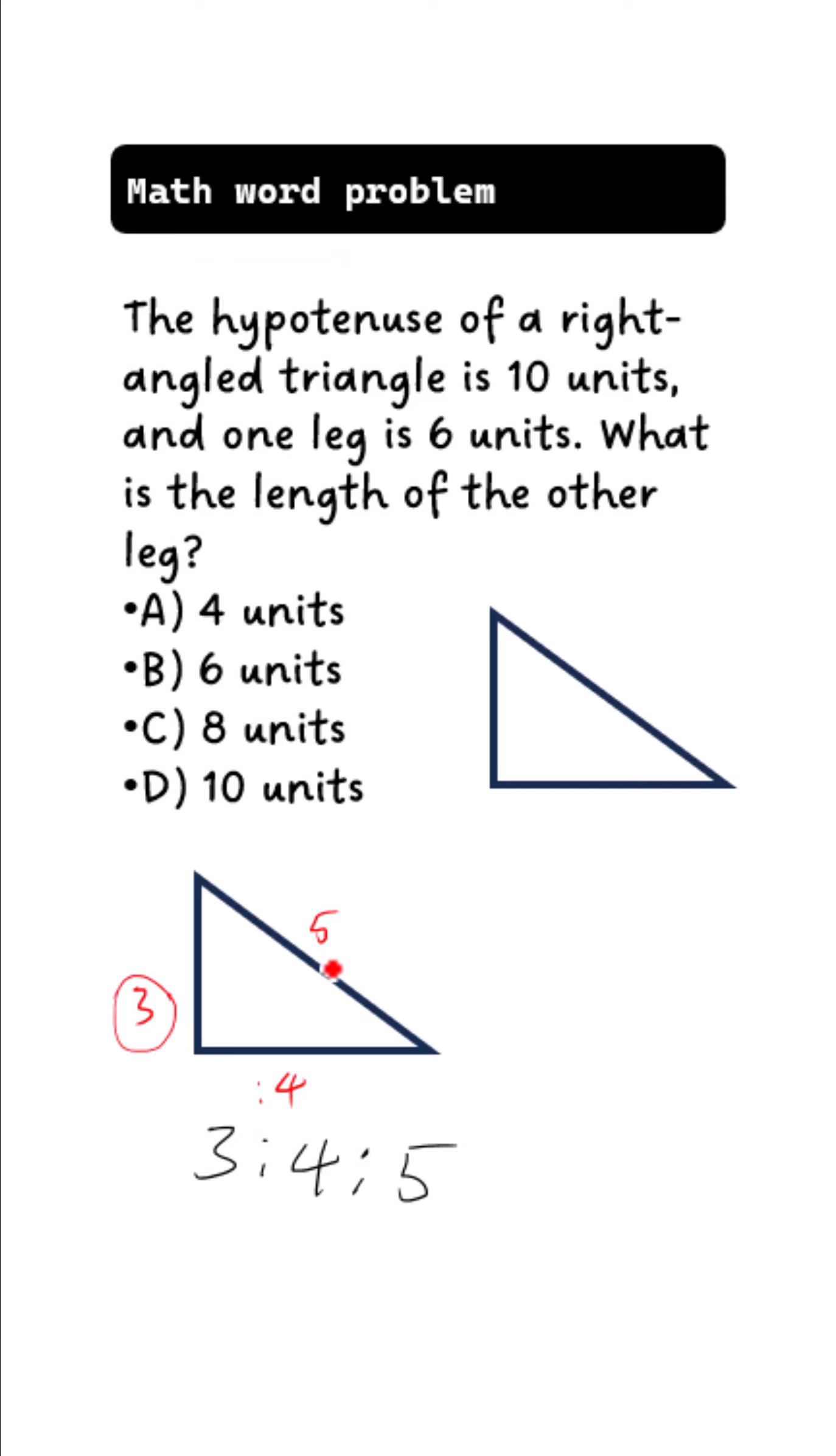and you just see 5 ratio 4, and this is hypotenuse, and this is one of the other legs, you know that this is 3. And if you have 5 ratio 3, and you don't have what is here, you know that this is 4.